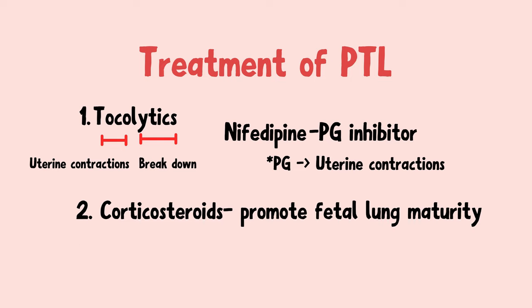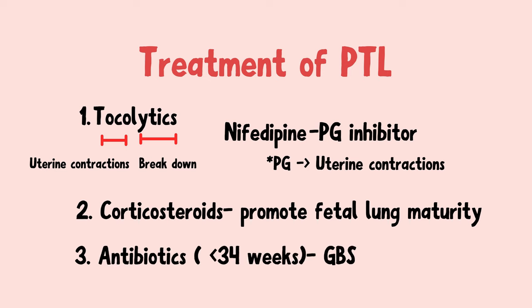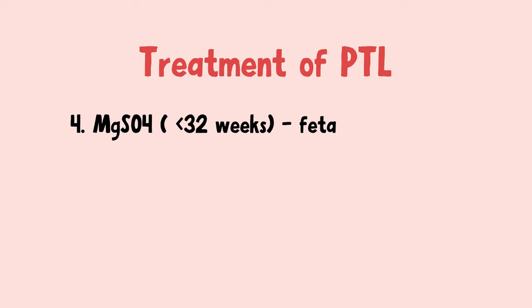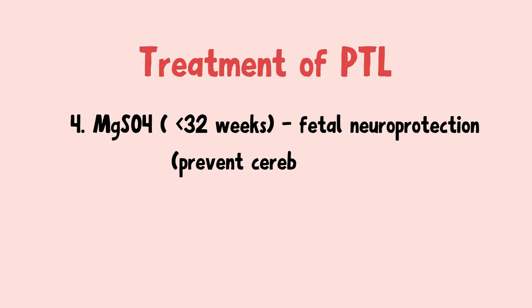For preterm labor at less than 34 weeks gestation, we can also administer antibiotics for GBS prophylaxis. For a mother less than 32 weeks gestational age, we also need to give magnesium sulfate for fetal neuroprotection, to prevent conditions such as cerebral palsy in the baby.